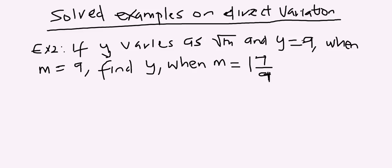We are looking at solved examples on direct variation. Example 2: If y varies as the square root of m and y is equal to 9 when m is equal to 9, find y when m is equal to 1 and 7 over 9.